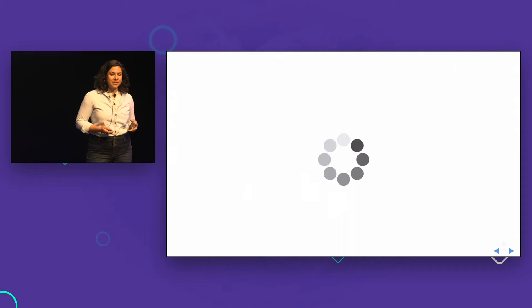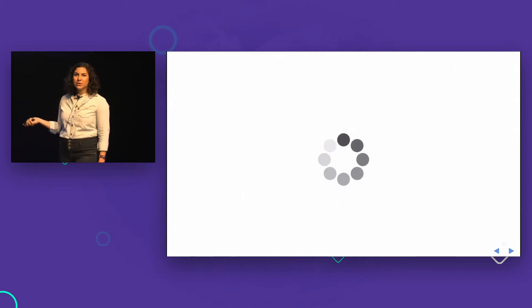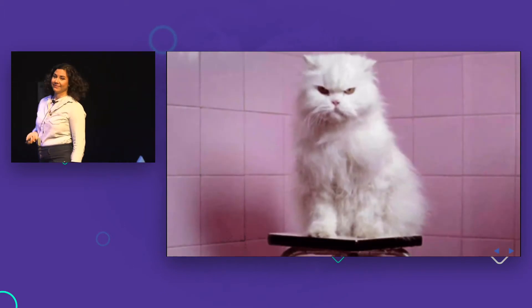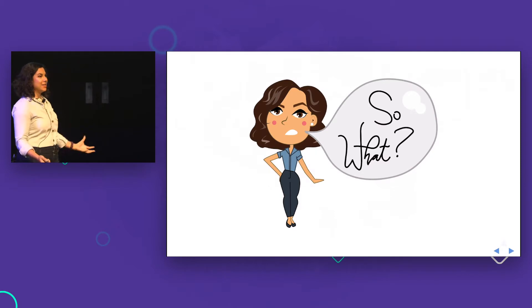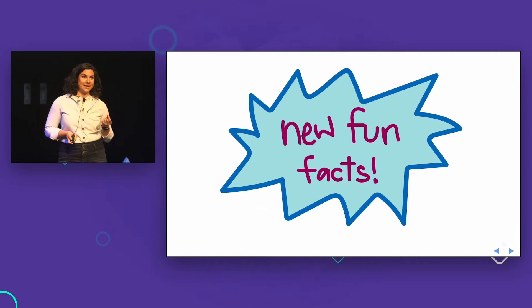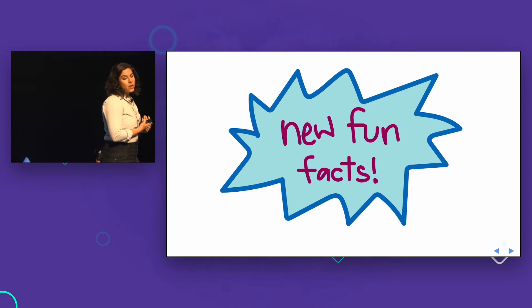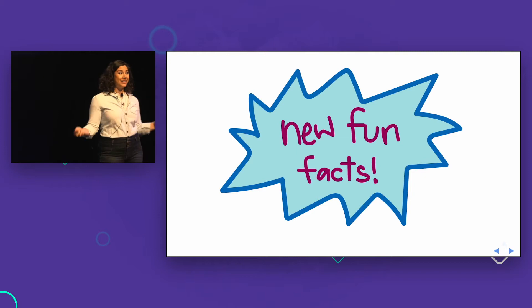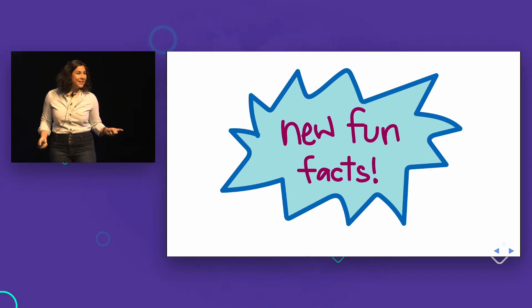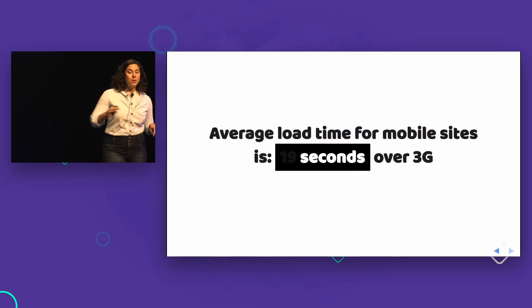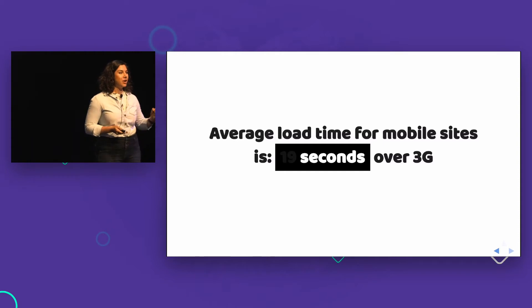And the repercussions are this — this is what we're doing to our users with irresponsible imaging. Google did a study last month, September of 2016, where they surveyed over 10,000 mobile devices on 3G. We're going to play a little game called fill in the blank. The average load time they found in the study for mobile websites over 3G — how many seconds?